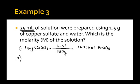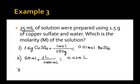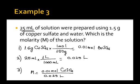The second step is to convert 25 milliliters to decimeter cubed or liters. Since 1 liter equals 1,000 milliliters, the volume is 0.025 liters. The molarity is then 0.01 moles of copper sulfate divided by 0.025 liters of solution, giving a molarity of 0.4 molar of copper sulfate.